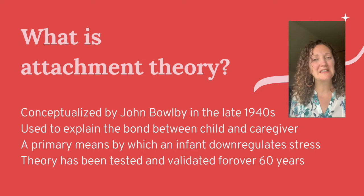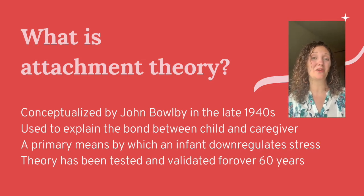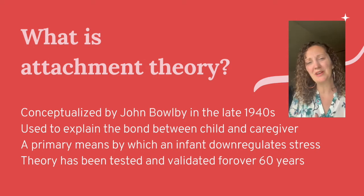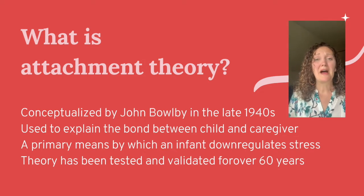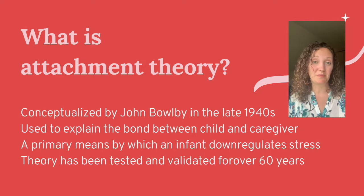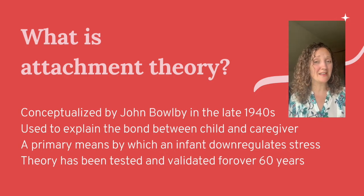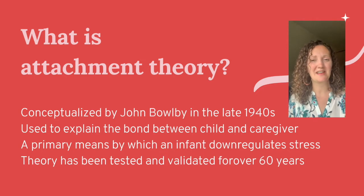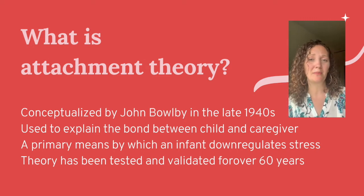Attachment theory tries to explain how an infant uses an attachment figure to down-regulate their own stress. We do it as adults too, and we'll get to adult attachment later. But the beginnings of attachment theory were really about young children and how this bond is created between mother and baby. If it's a really secure attachment bond, it can help a child down-regulate their own stress. Unfortunately, sometimes parents react to children in ways during times of distress that creates an insecure bond, and that can make it so that a child cannot down-regulate their stress, with some other dire consequences we'll talk about in another video.